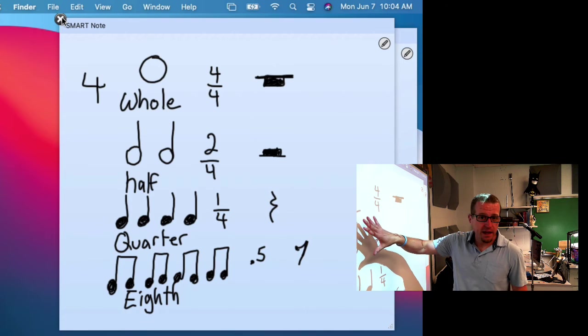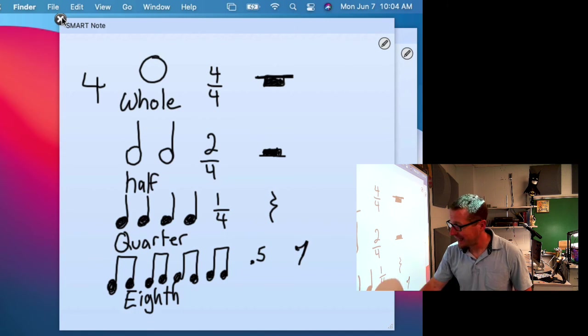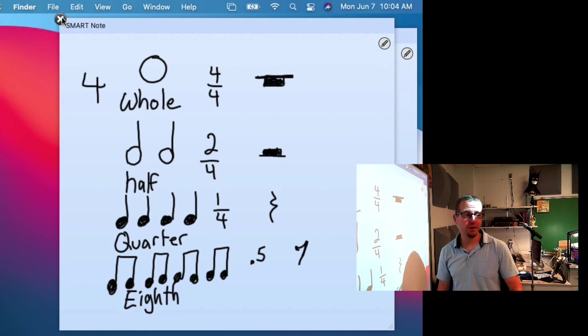So whole just a circle. Half with a stem. Quarter with a stem and a colored in head. And then eighth with a stem, a colored in head, and a flag, an extra line up top. Sixteenth note would add another flag. Five and thirty seconds, and it keeps going. They just keep adding one more piece to it. Alright, thank you for watching.